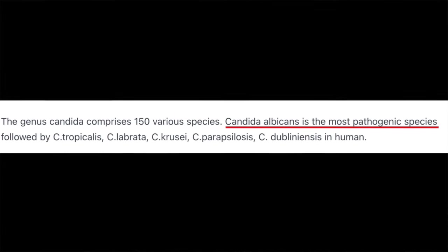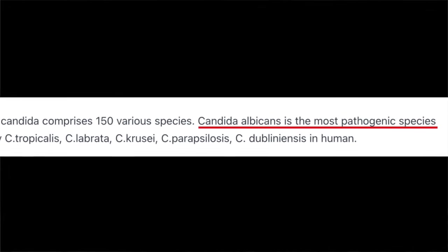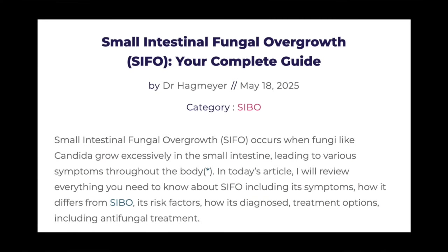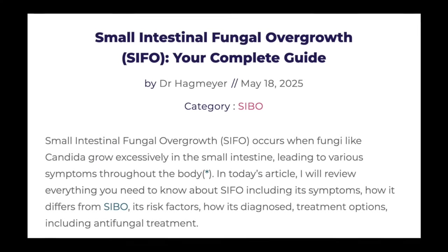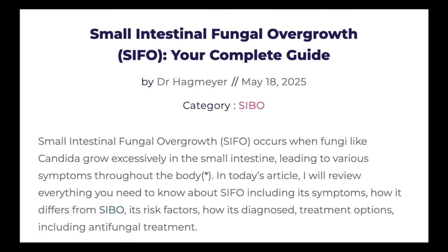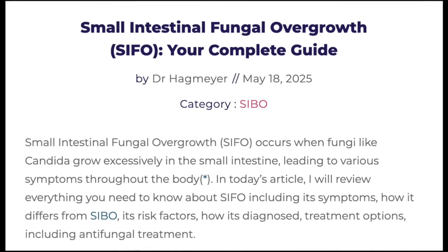Candida albicans is much more common. It's commonly found on human hands, in the gastrointestinal tract, and now a lot of people are starting to be diagnosed with a medical condition called small intestinal fungal overgrowth. This is caused usually by Candida albicans.